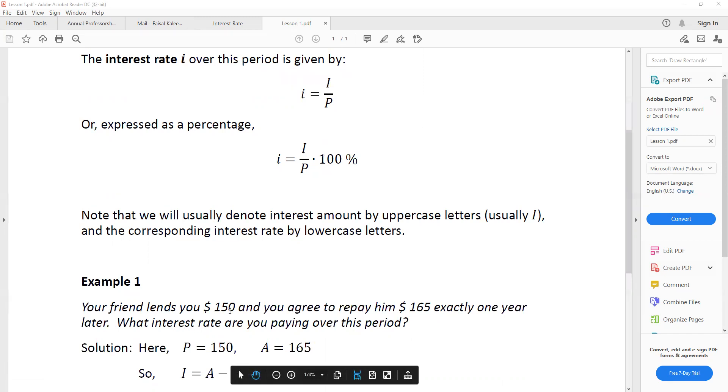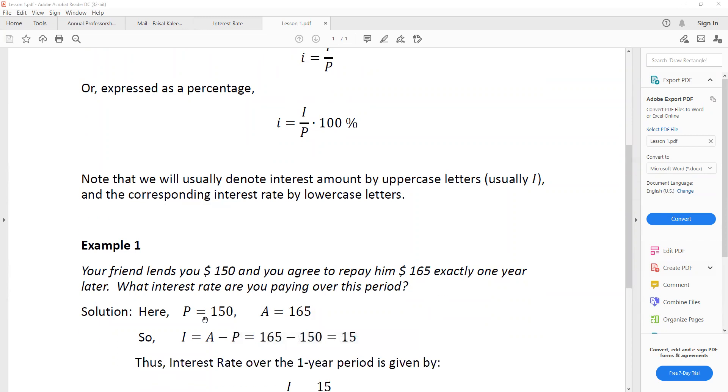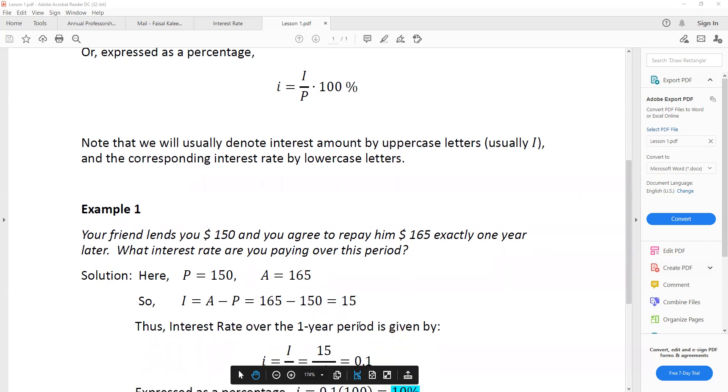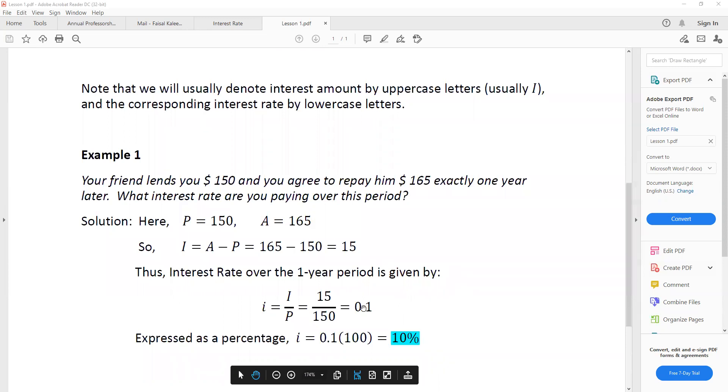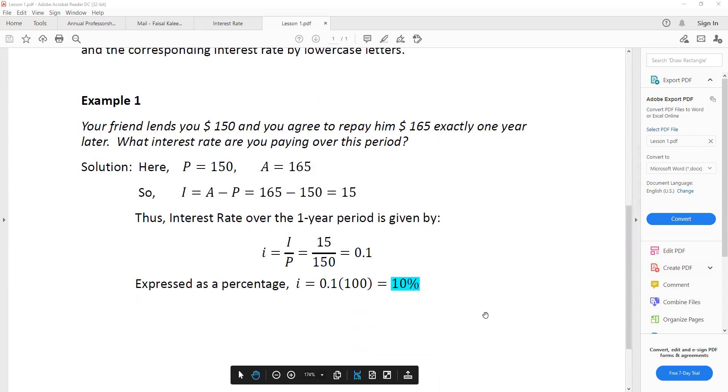So obviously the interest amount is $15. So we'll just subtract 150 from 165. The principle here is 150. The final amount is 165. My interest amount is A minus P, which would be 15. And the interest rate, as we said, is I over P. So 15 divided by 150 equals 0.1. But usually we express it as a percentage. So then we multiply this quotient by 100 and that gives us 10. So it's 10%. So you can say that the interest rate is 0.1 or 10%.